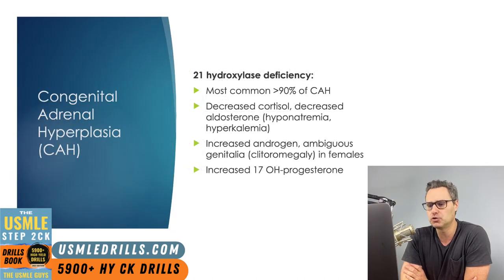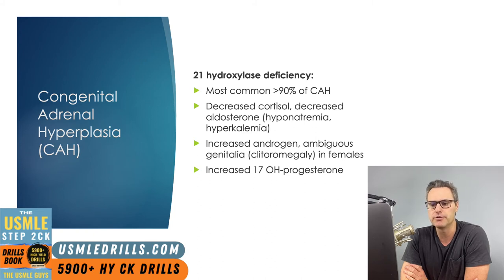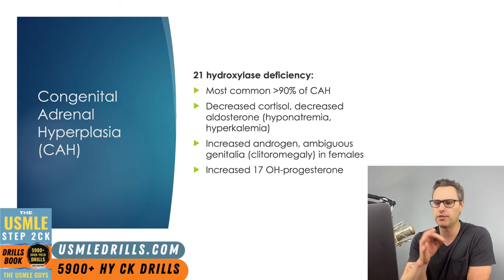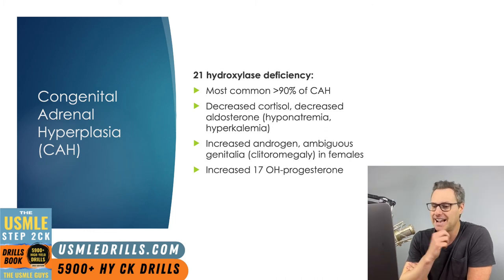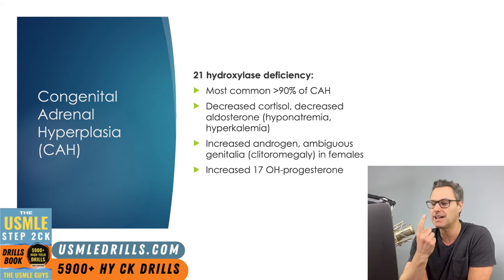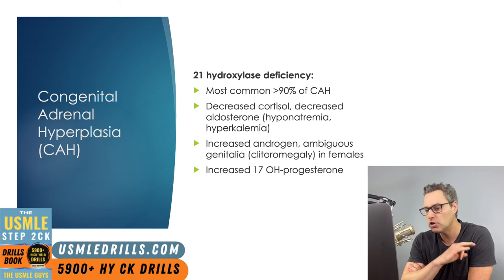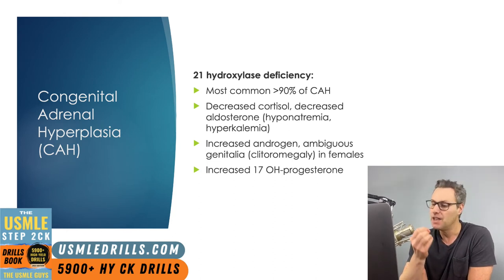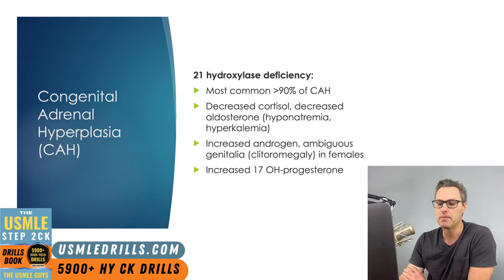Let's move on to congenital adrenal hyperplasia. We have three main enzyme deficiencies to know. The 21-hydroxylase deficiency is by far the most common form, making up over 90% of cases. With this deficiency, you'll see decreased cortisol, increased androgens, and decreased aldosterone, which clinically appears as hyponatremia and hyperkalemia. Also look for ambiguous genitalia in female patients. The hormone found in excess is 17-OH progesterone, because this hormone is broken down by 21-hydroxylase.